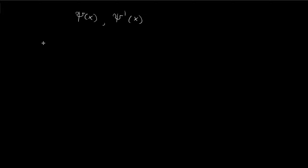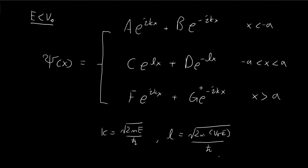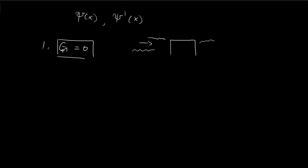First of all, recognize that g is equal to zero. We know g equals zero because we're analyzing the scenario where the particle is coming in from the left to the right. When it comes in from the left, it encounters the potential barrier and either bounces back or passes through. In no situation would you find the particle coming in from the right, so the g term is equal to zero.